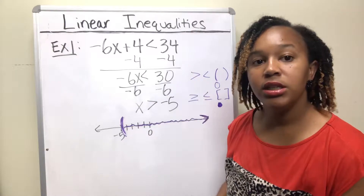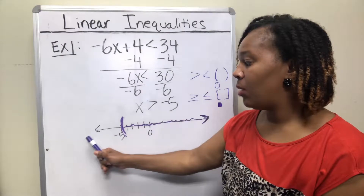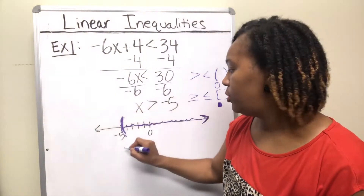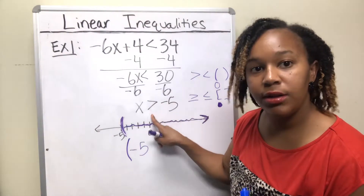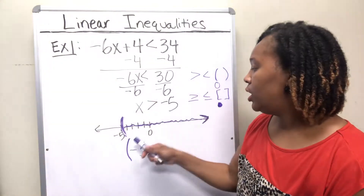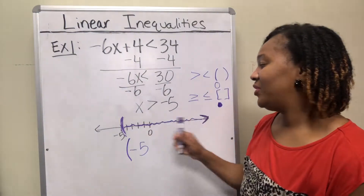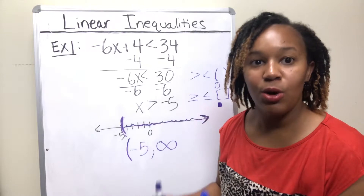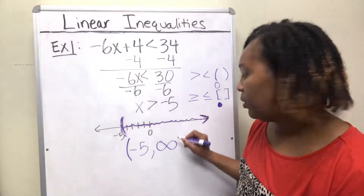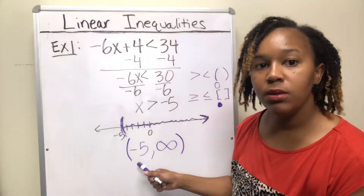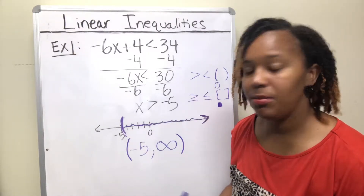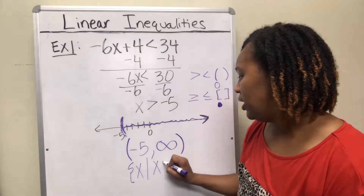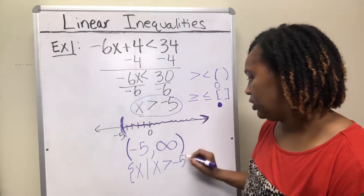To write this in interval notation, read the graph from left to right. The smallest number shaded is negative 5, so we write negative 5 with a parenthesis because there is no line underneath the inequality symbol. The graph keeps going without stopping, which means it goes to infinity — a sideways eight, not a number, but a concept meaning it keeps going. You always put parentheses around infinity. In set builder notation, you write: brace, x, such that x is greater than negative 5, close brace. You basically just repeat your answer.